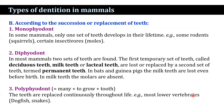On the basis of replacement and succession, teeth are categorized as monophyodont, diphyodont, and polyphyodont. In monophyodonts, found in some mammals, only one set of teeth develops in their lifetime. This is found in some rodents and certain insectivores.